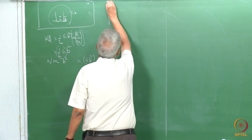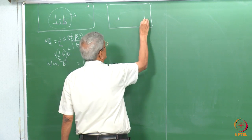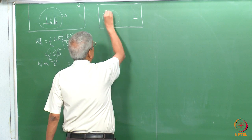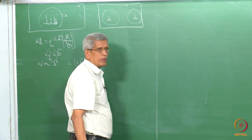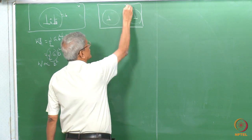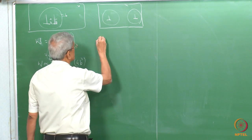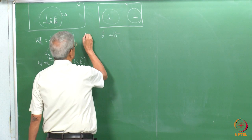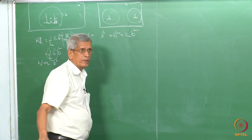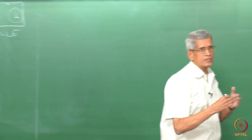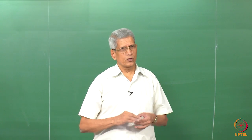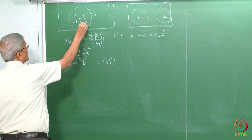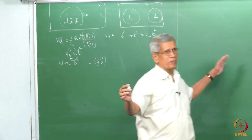Consider the same case where two dislocations are in the same slip plane but very far away. The self-energy due to both will be B² plus B², giving total energy 2B². That means as the dislocations are far apart, the total energy is reduced. This implies that if two dislocations with the same Burgers vector are very close, they will try to repel each other so they move far apart to reduce their overall energy.